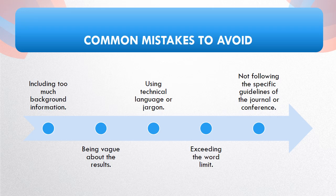Avoid common mistakes in abstract writing like including excessive background information, being vague about results, using technical jargon, exceeding word limits, and not adhering to journal or conference guidelines. Awareness of these pitfalls ensures your abstract is concise, clear, and aligned with expectations, enhancing its impact and accessibility to readers.